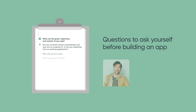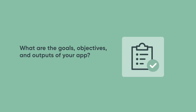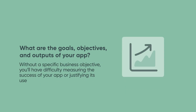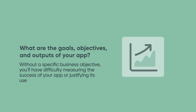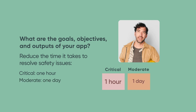Now let's look at some of the questions to ask yourself before building an app. We'll answer them from Luke's perspective. First, what are the goals, objectives, and outputs of your app? In other words, what business problem are you trying to solve? Without a specific business objective, you'll have difficulty measuring the success of your app or justifying its continued use within the organization. Luke's measurable objective looks like this: reduce the time it takes to resolve critical safety issues to one hour, moderate issues to one day, and low priority issues to four business days.